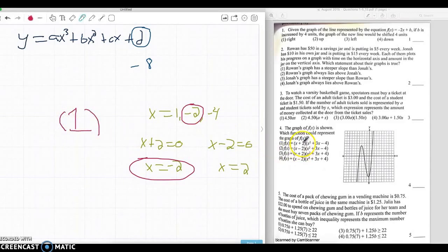Because x plus 2 gives you an x-intercept of x equals negative 2. And then when you distribute this 2 to this negative 4, it gets negative 8, which is the y-intercept. So the answer is 1.